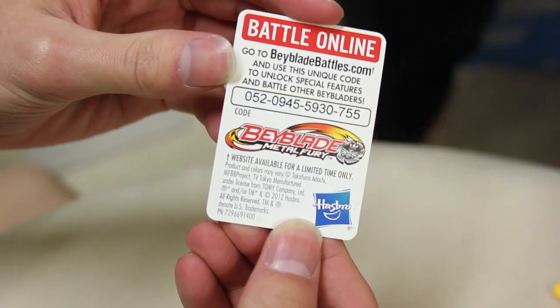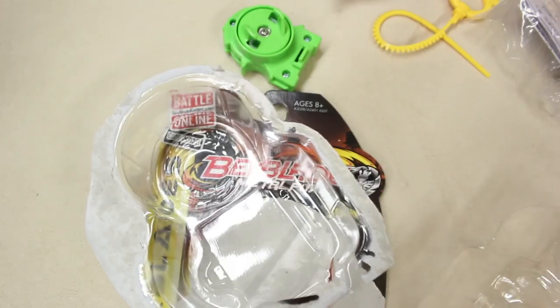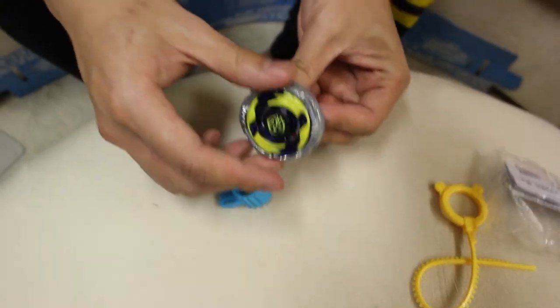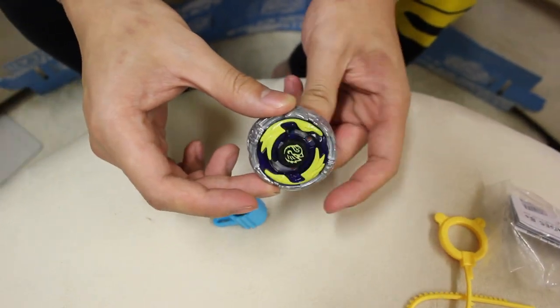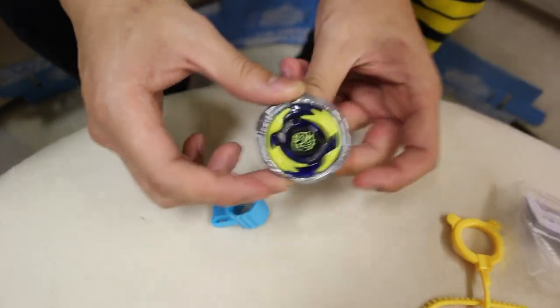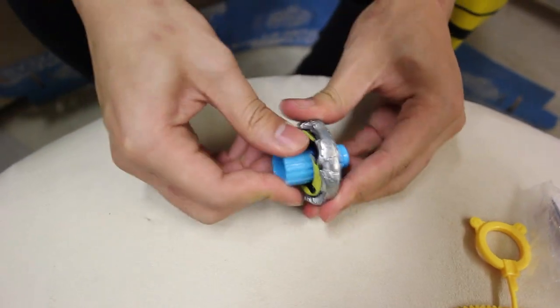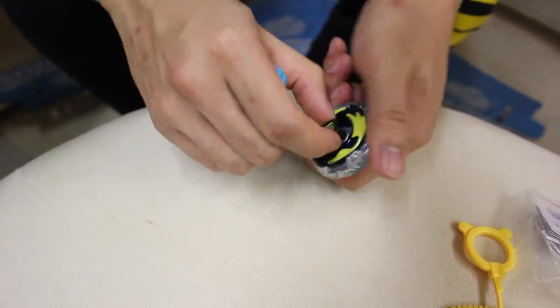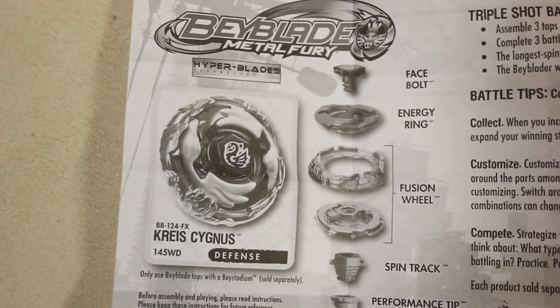Chris Cygnus 145WD. There you go. So I'm gonna disassemble the Bey. Look at that. That rotation. 4D system. Just like the Takara Tomy. Let's take it apart and we'll show you the whole Beyblade. So there's Chris Cygnus. There's no stickers.